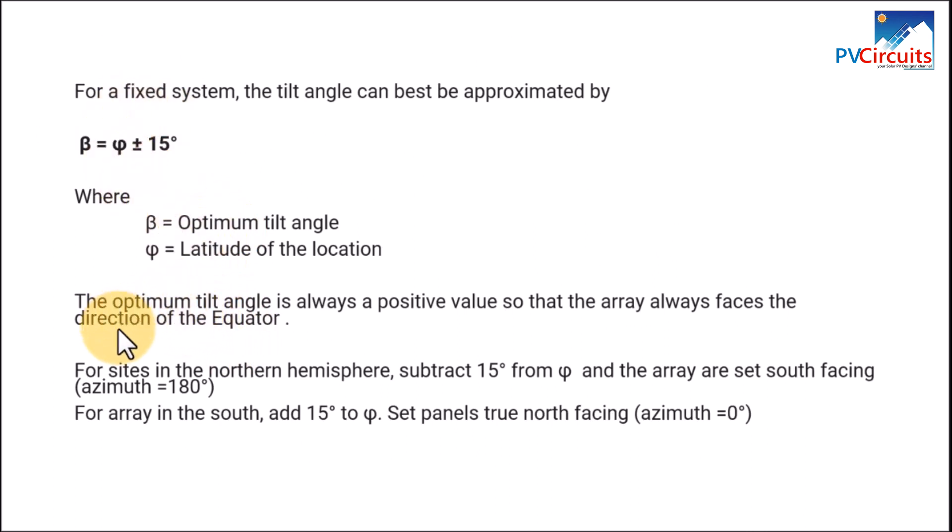The optimum tilt angle is always a positive value so that the array always faces the direction of the equator. And for sites in the northern hemisphere, subtract 15 from φ, so this part here becomes negative and so we'll subtract the 15 degrees, and the array are set facing south, azimuth 180 degrees.